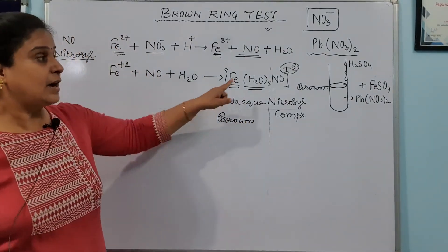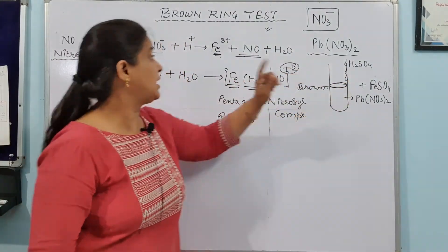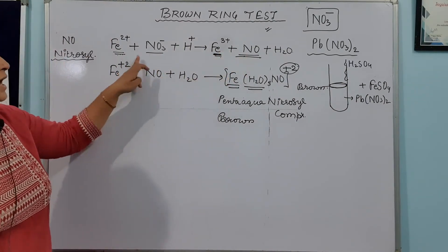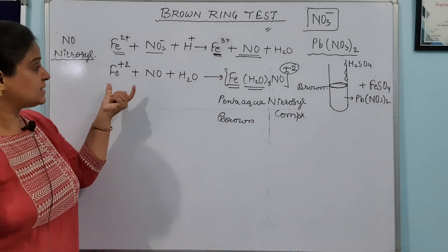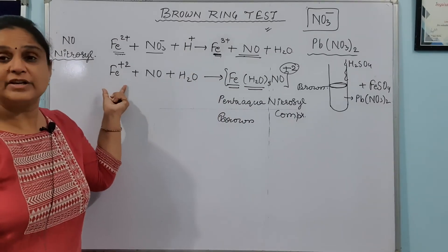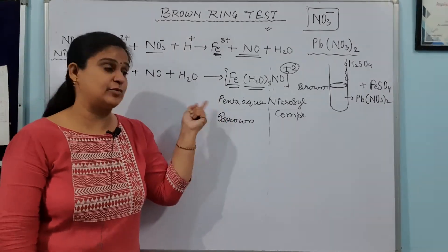So as soon as your H+ connects, you get NO which works as a ligand for the making of complex. And the complex formed is brown in color.